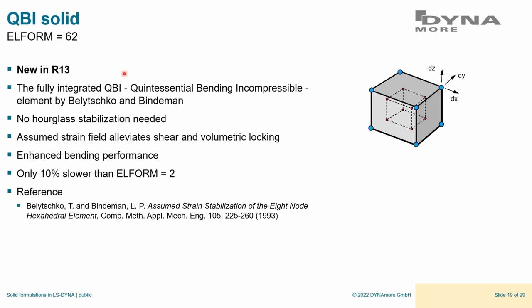The new ELFORM 62 is the fully integrated version of the quintessential bending incompressible (QBI) element by Flanagan and Belytschko. They derived both the fully integrated version and the hourglass stabilization — ELFORM type 6 — in the same paper. ELFORM 62 uses an assumed strain field to counteract both shear and volumetric locking, giving enhanced bending performance. Compared to ELFORM 2 it's not much slower, and it is considerably faster than ELFORM -18, using a completely different approach to address the locking problems.